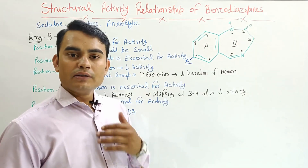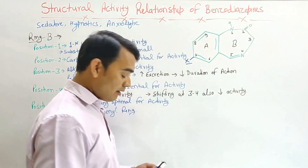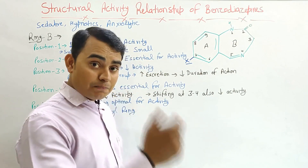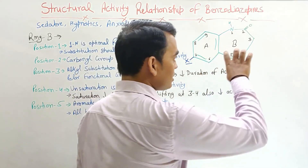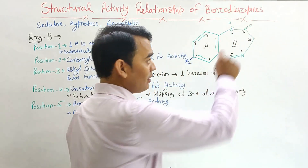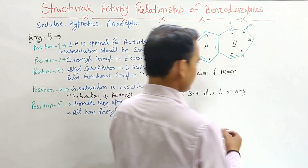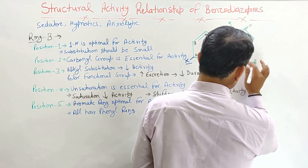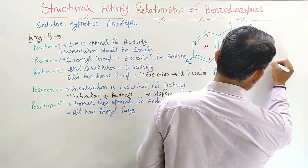Now, ring B. Why is it called benzodiazepine? It is a 6 plus 7 member fused ring with two nitrogens, and these nitrogens are at positions 1 and 4, which is why it is called 1,4-benzodiazepine.